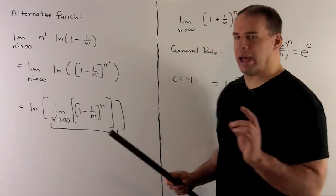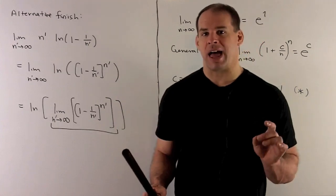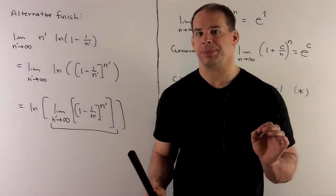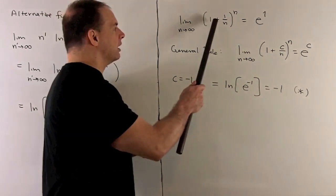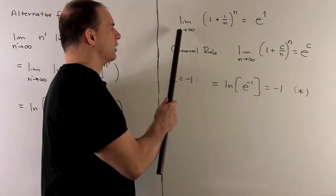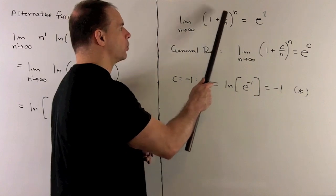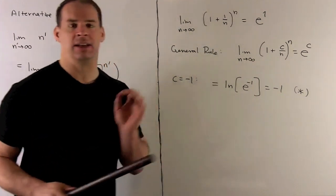Now this should be familiar from when you do limits with the natural log and the exponential function. So in this case, what do we have? Well, if I had a plus sign here, the rule is going to be the limit as n goes to infinity of (1 + 1/n) to the nth power is e to the 1.